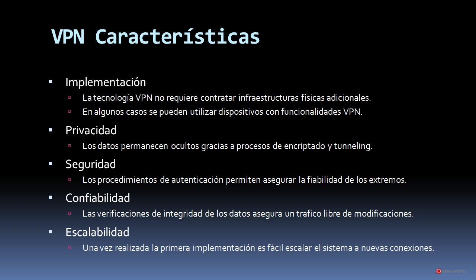If we ask ourselves what are the characteristics that we are going to need and that will be provided through those VPNs, we will find: implementation — VPN technology does not require contracting additional physical infrastructures, in some cases devices with VPN functionalities can be used; privacy — data remains hidden thanks to encryption and tunneling processes; security — authentication procedures allow ensuring the reliability of endpoints; reliability — data integrity verifications ensure traffic free of modifications; and finally scalability, since once the first implementation is done, it is easy to scale the system toward new connections.